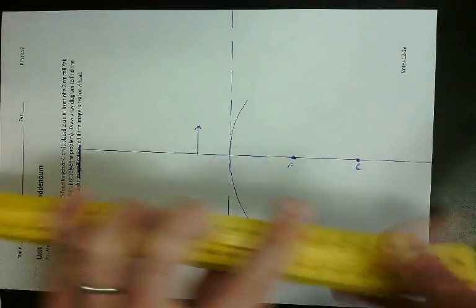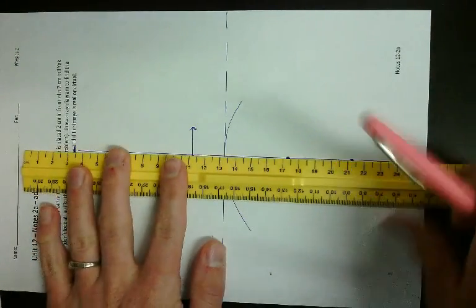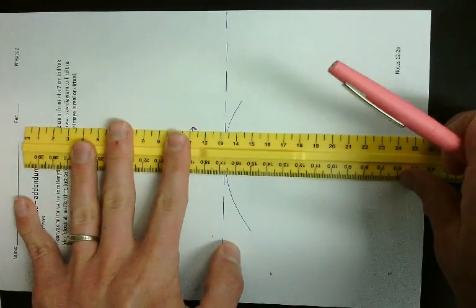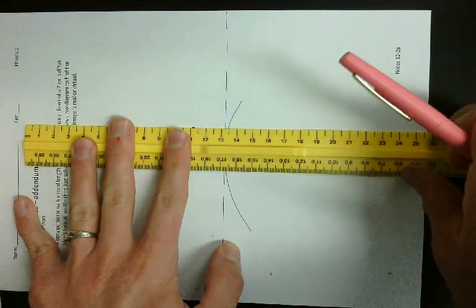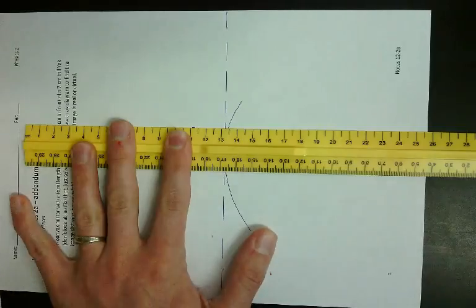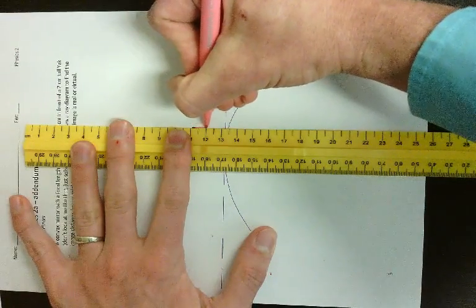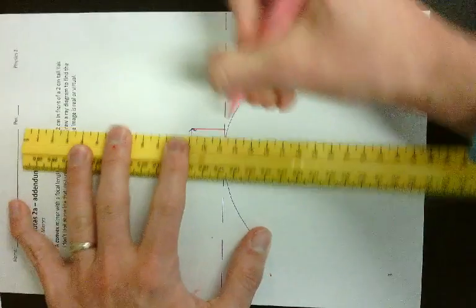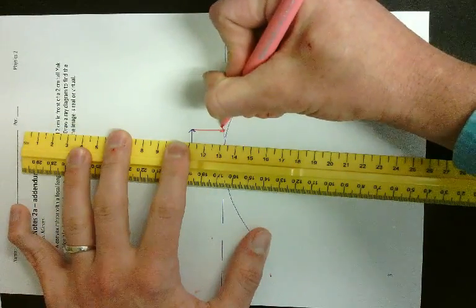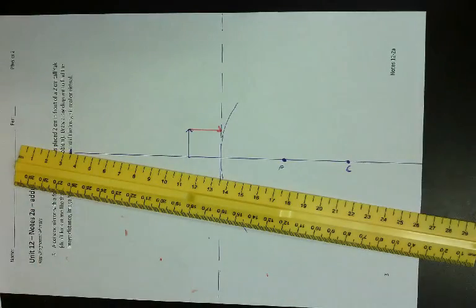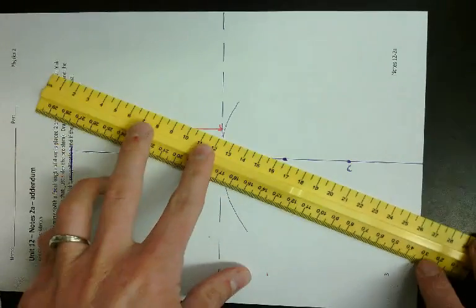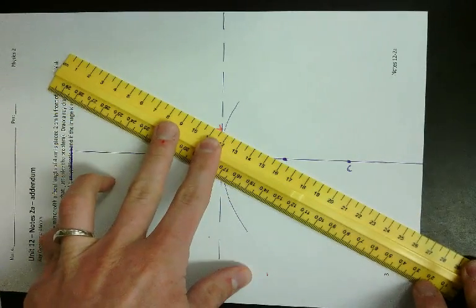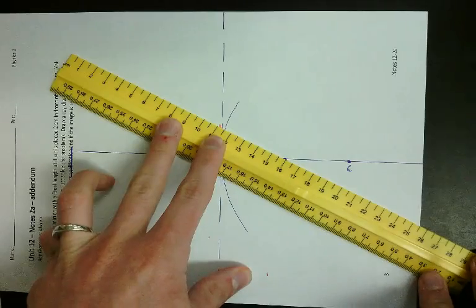So what I do is I draw a line that's parallel to the principal axis. They always start at the top of my object, and it goes to that vertical line, not to the mirror. So I'm going to draw a line that goes from here to there. It then reflects through F. So what I do is I touch that part on the mirror, well, that vertical line, and I go through F, and I line it up.